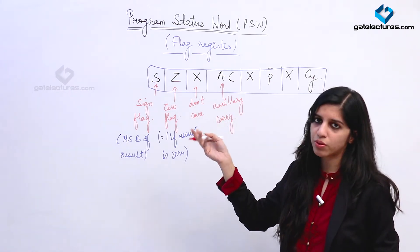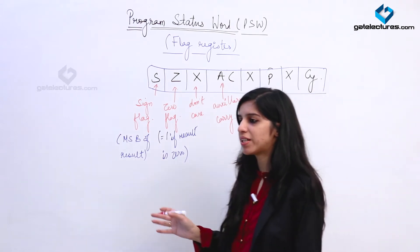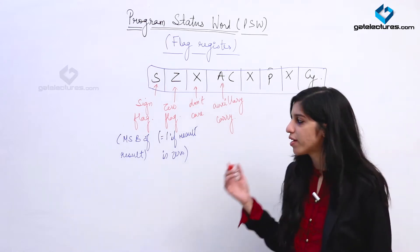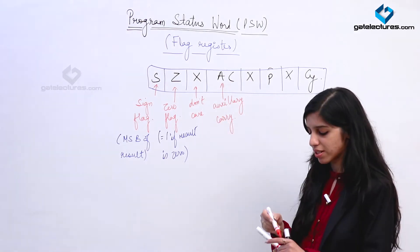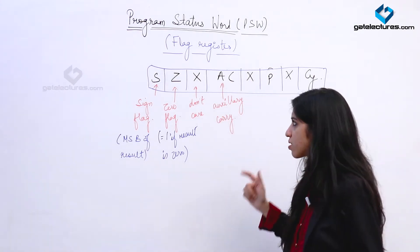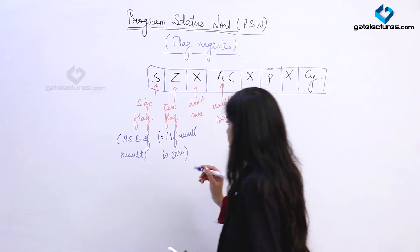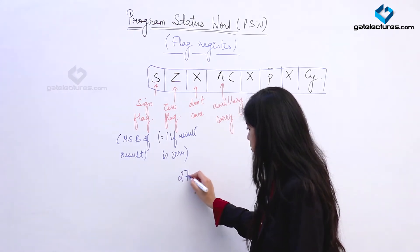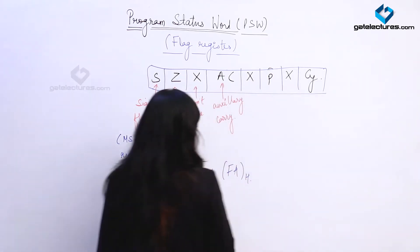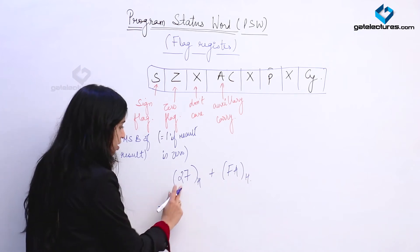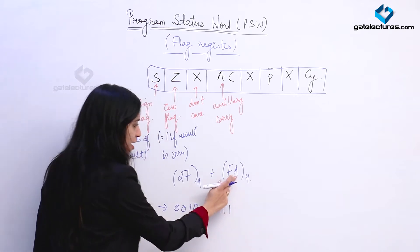Since all registers in the 8085 are 8-bit, whenever you are performing an 8-bit addition or subtraction operation, if a carry occurs from the lower 4 bits to the upper 4 bits, that carry is known as the Auxiliary Carry. We can see an example to understand this. Suppose we are adding two numbers: 27 plus FA, representing these numbers in binary.